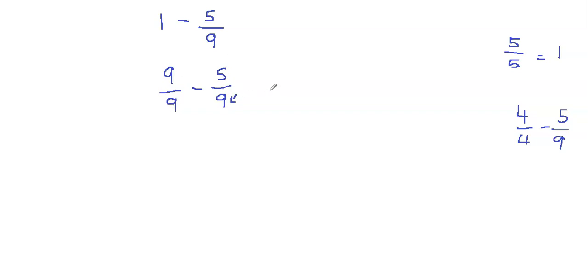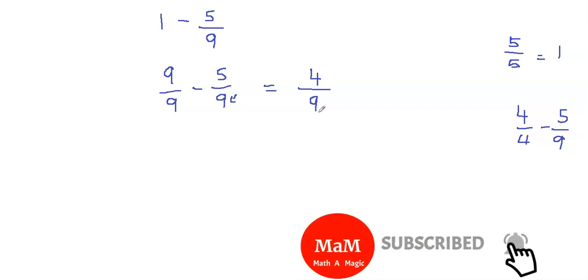Now, this is very simple. All we need to do is to subtract the numerator since we have the common denominator. So remember that we don't change the denominator, so the denominator will remain 9, and then we can subtract the numerator. So 9 minus 5 will give us 4. And since we cannot simplify this fraction anymore, our final answer would be 4 ninths.